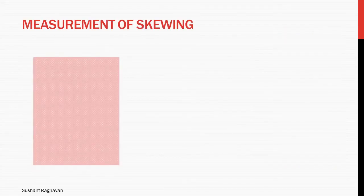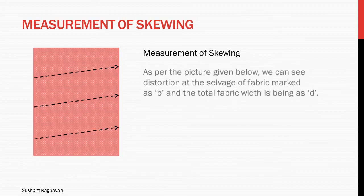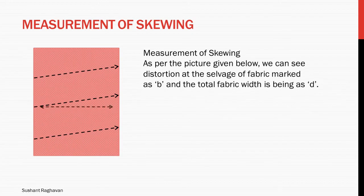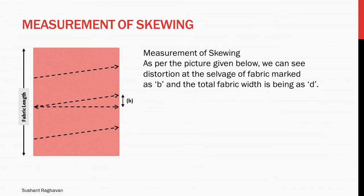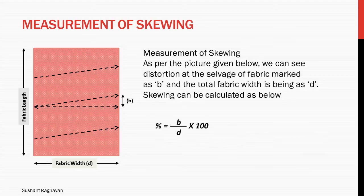Measurement of skewing: as per the picture given below, you can see the distortion at the selvedge of the fabric marked as B, and the total fabric width is marked as D. Skewing percentage can be calculated as: percentage = (B ÷ D) × 100.